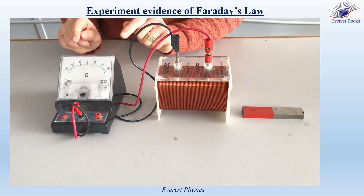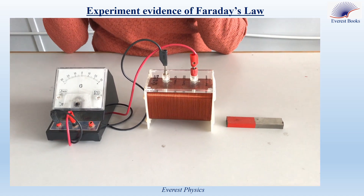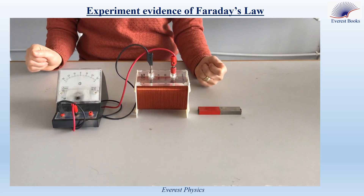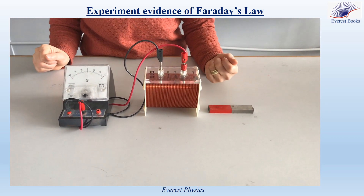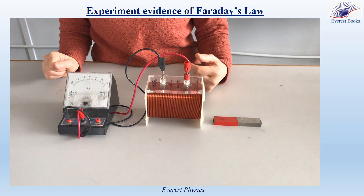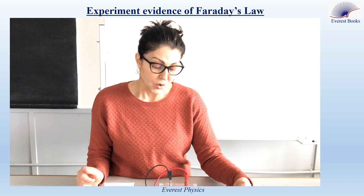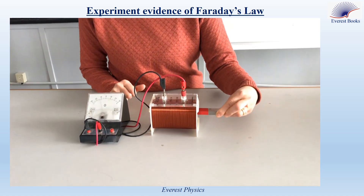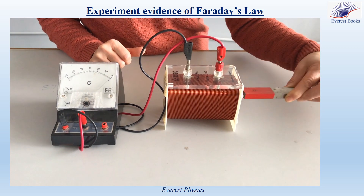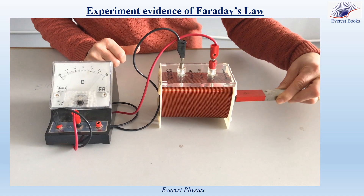When the deflection of the needle increases, this means that a larger induced current is carried by the circuit. A larger induced current is due to a larger induced electromotive force. But how can we relate this to the variation in the magnetic flux? When we move the magnet faster, the variation in the magnetic flux increases.